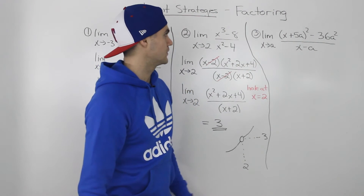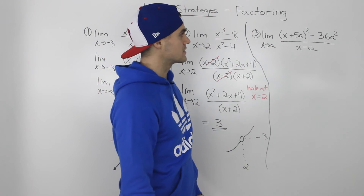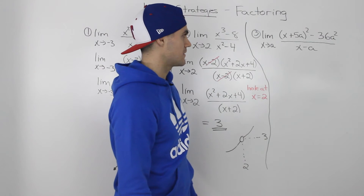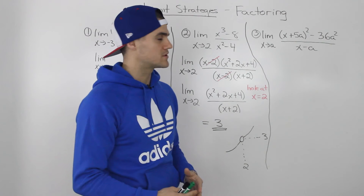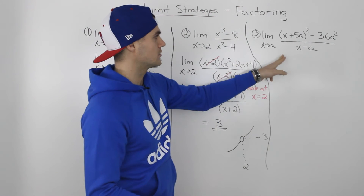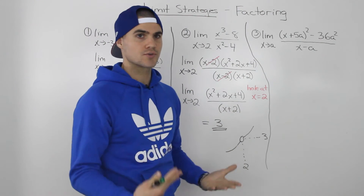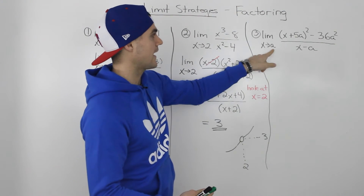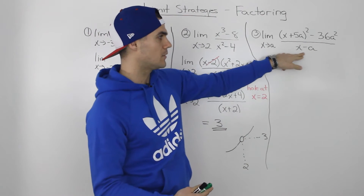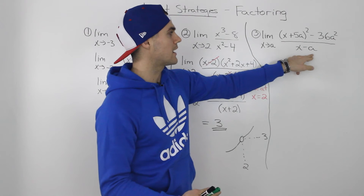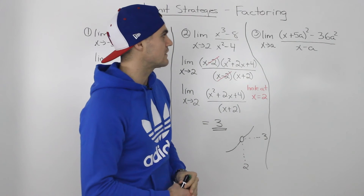Moving on to the third example: the limit as x approaches a of (x plus 5a) squared minus 36a squared, all over x minus a. This is a somewhat unusual limit because we're dealing with two variables. First thing to check is direct substitution — but if we substitute a for x, the denominator becomes a minus a, which is 0. So we can't do that and need to try factoring.